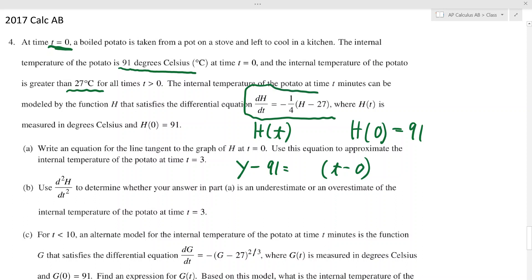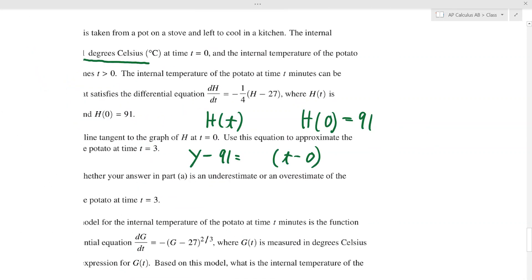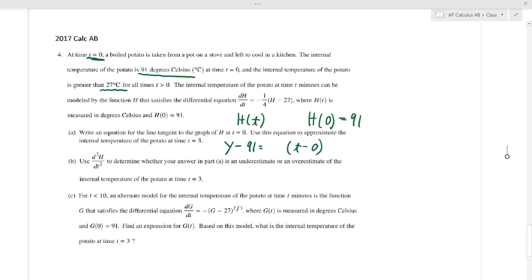Only thing we're missing is the slope and the slope is right here. And here's a super duper common thing kids do incorrectly. They plug zero into that derivative to get what the slope would be. But you don't plug zero in because the derivative has an h in it, not a time. Time is zero, but h is 91.